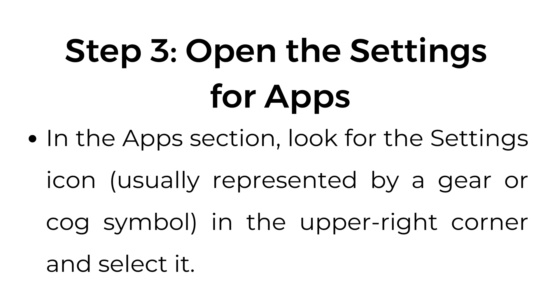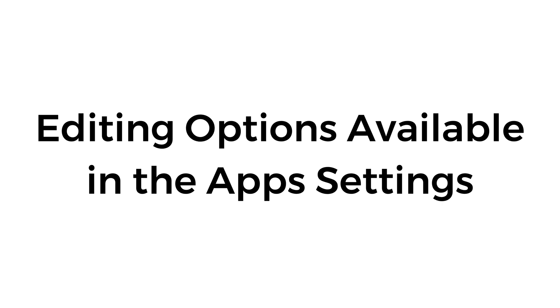Step number three: open the settings for apps. In the apps section, look for the settings icon, usually represented by a gear or cog symbol in the upper right corner, and then select it. Editing options are available in the app settings.